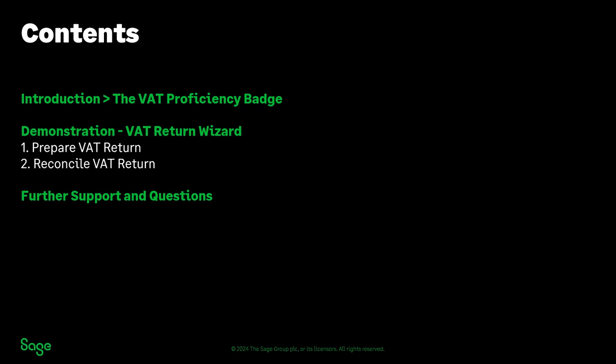So this is what we're going to cover today — a little bit of introduction to the VAT proficiency series of webinars, covering seven topics. Today's demonstration we're going to be looking at the VAT return wizard. This session is suitable for both UK and Republic of Ireland. There's very little difference other than the appearance of the VAT return itself and how the figures calculate, but the process is pretty much the same. We're going to be looking at preparing your VAT return — step one within the wizard — and then moving on to step two as well.